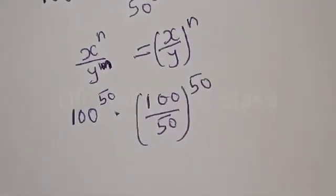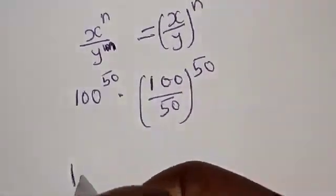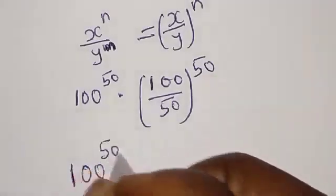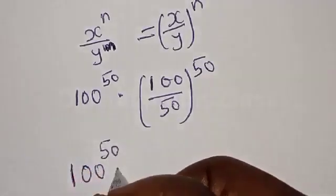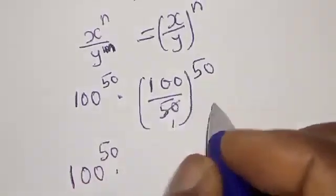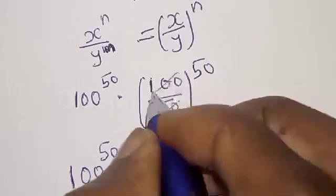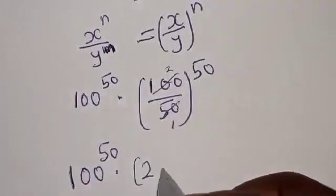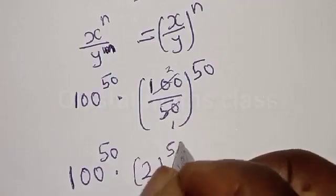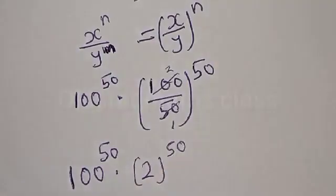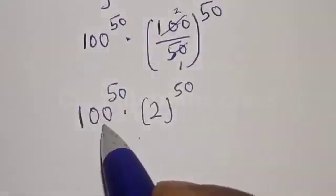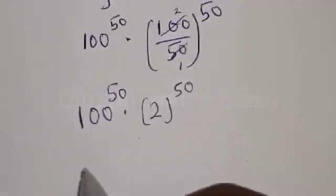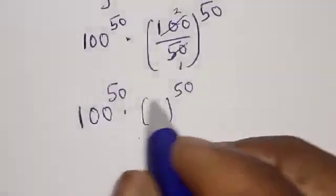Now we have 100 raised to power 50 multiplied by 100 divided by 50 raised to power 50. Here 100 divided by 50 gives 2, so that is 2 raised to power 50. In this case we have different bases but the same exponent, or the same power.